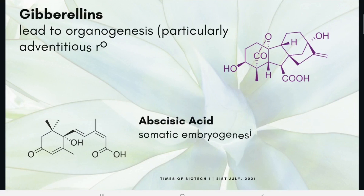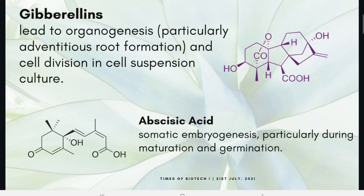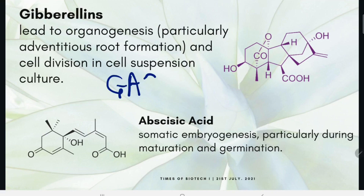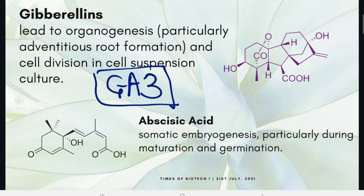Other hormones utilized in plant tissue culture are gibberellins and abscisic acid. Gibberellins are used for organogenesis, particularly in adventitious root formation and cell division in cell suspension culture. Even though there are 70+ gibberellin compounds, we utilize only a few forms, one of which is GA3, which is widely used in plant tissue culture. Abscisic acid is utilized for somatic embryogenesis, particularly during maturation and germination.